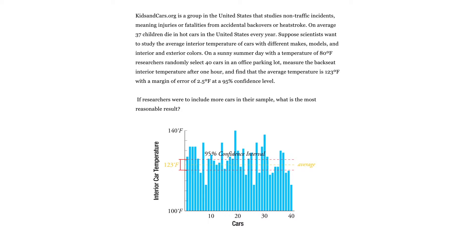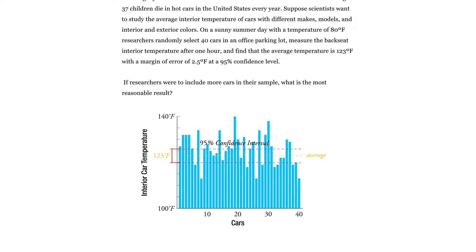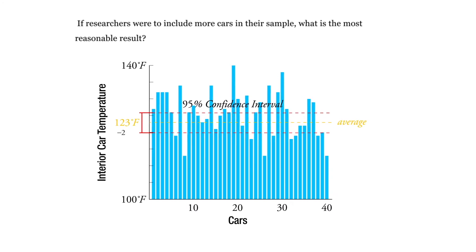Based on our sample size and how far away from the mean our cars were, we have a 95% chance that the true average for all the cars in the parking lot is between 123 minus 2.5 degrees, which is 120.5, and 123 plus 2.5 degrees, which is 125.5.